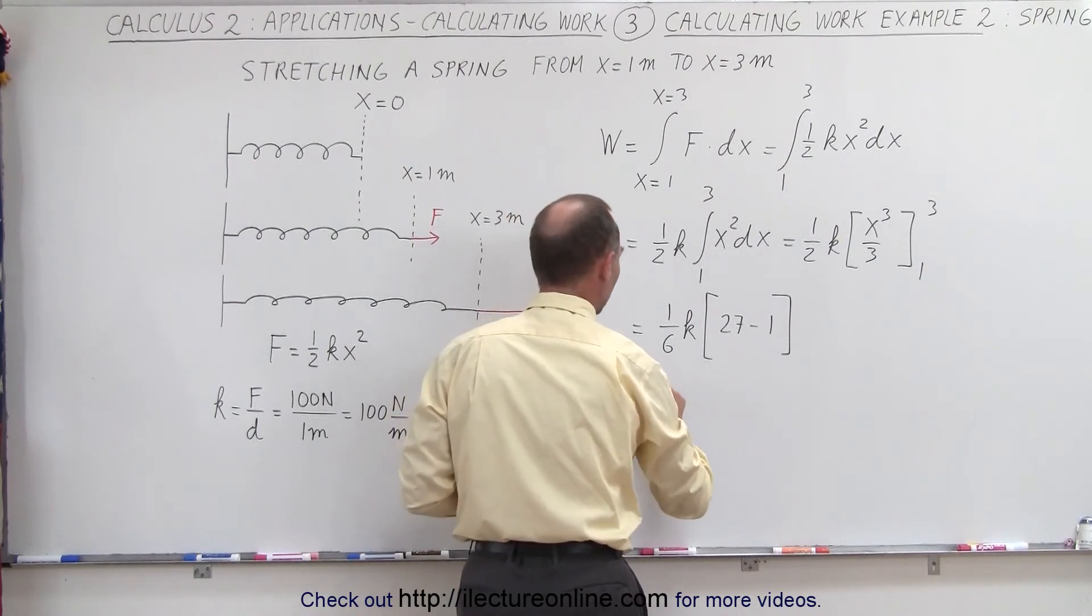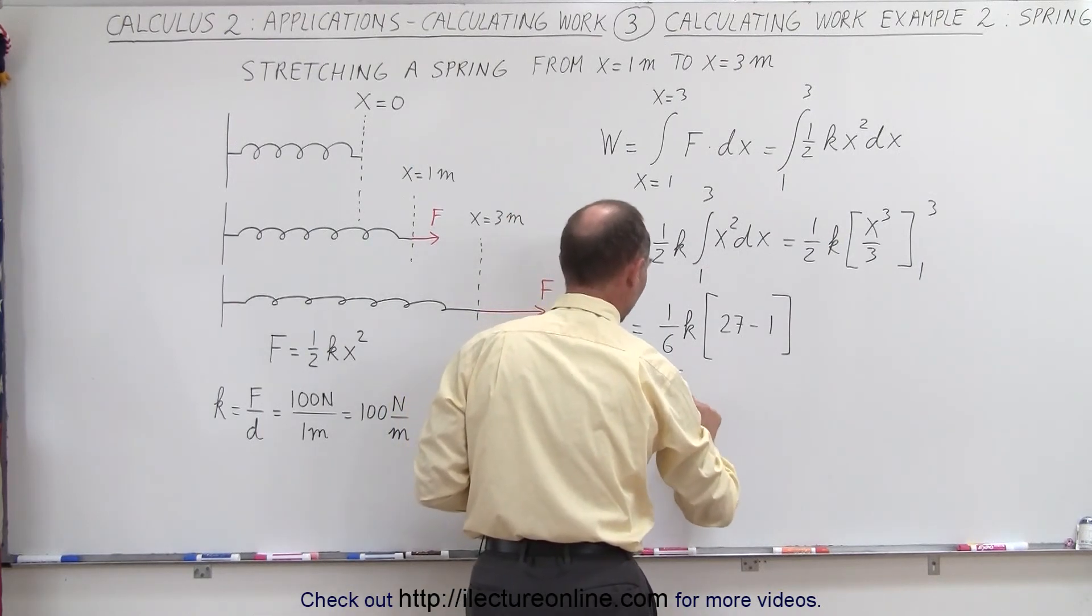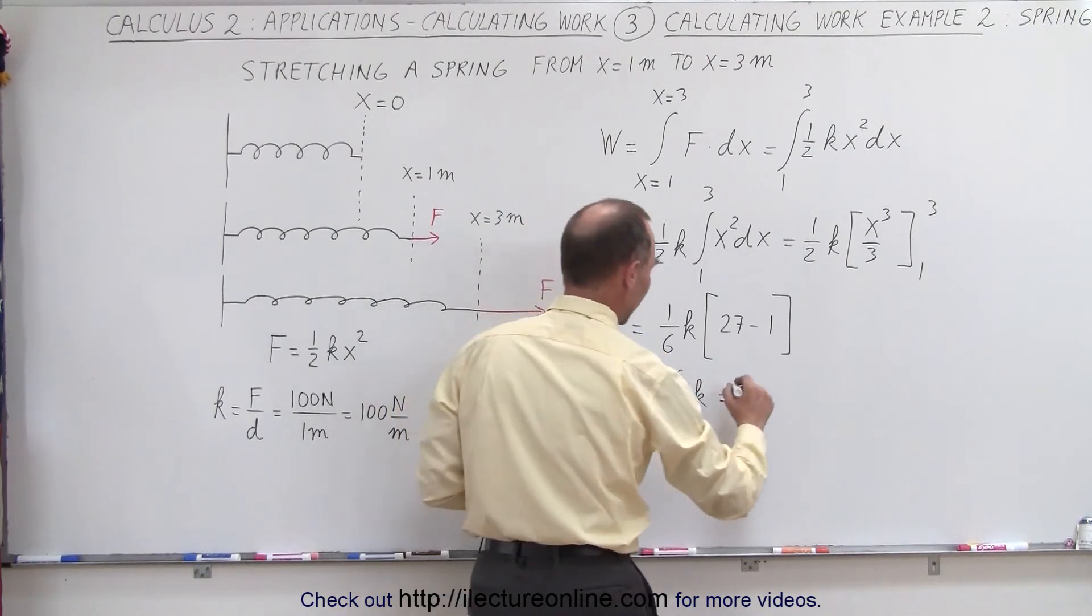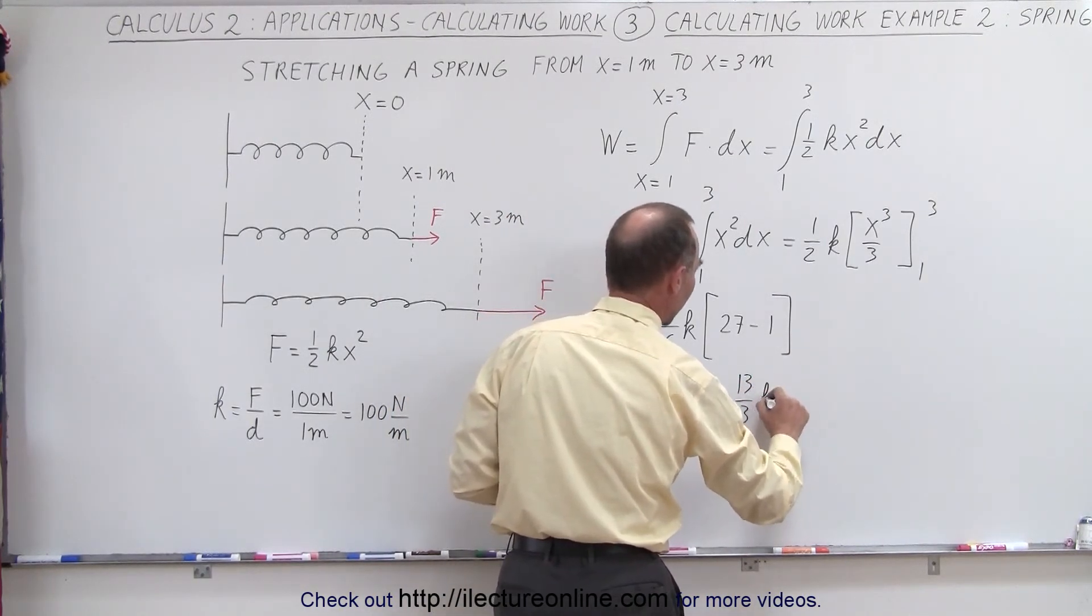And that would be equal to 26 over 6 times k, which is equal to, when we simplify that, we get 13 over 3 times k.